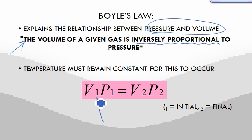Where the subscript 1 is the initial volume and initial pressure, and then you have your final volume and final pressure.